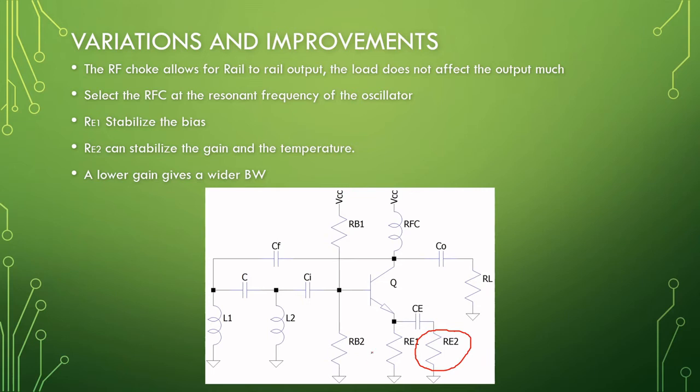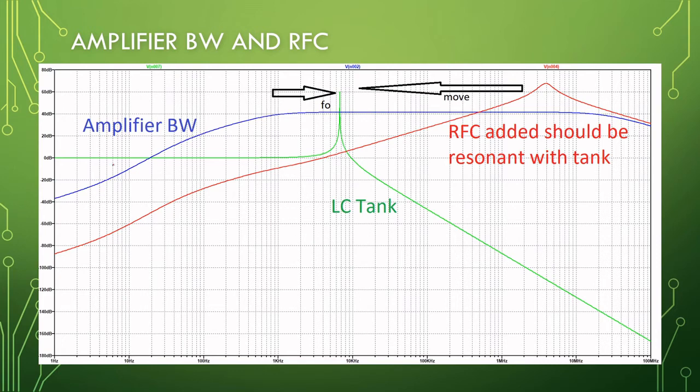If we want to keep the bandwidth of our amplifier gate great, we can reduce the gain by adding emitter resistor here and by this limiting our gain. RE1 to stabilize our bias. Always ensure that the LC tank's resonant frequency is within the bandwidth of your amplifier and choose your RF choke to be resonant with your tank to maximize the output of your circuit.